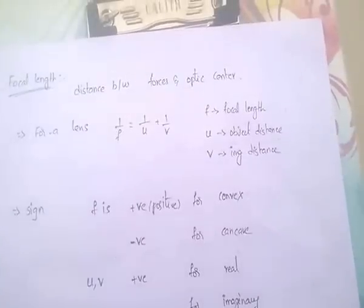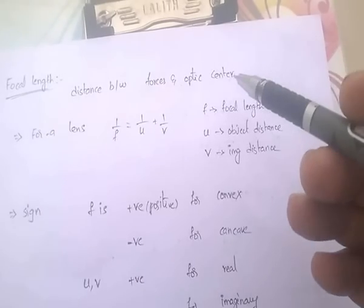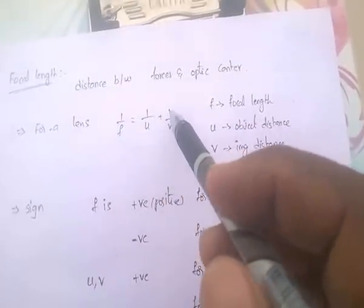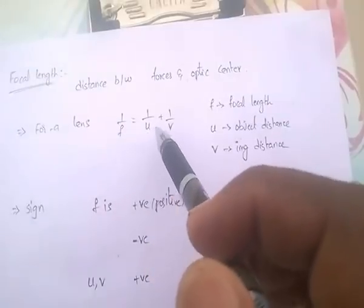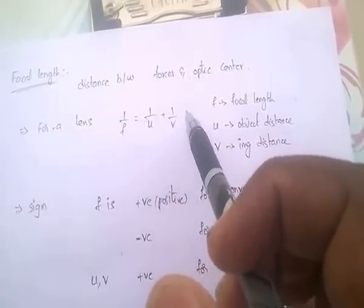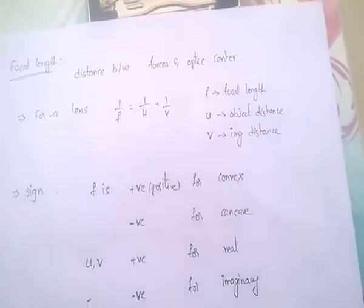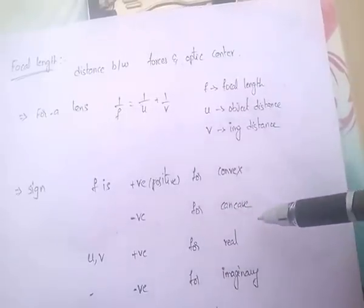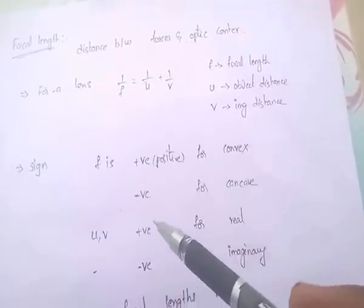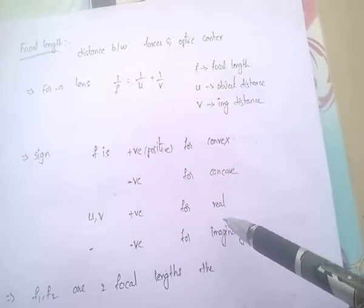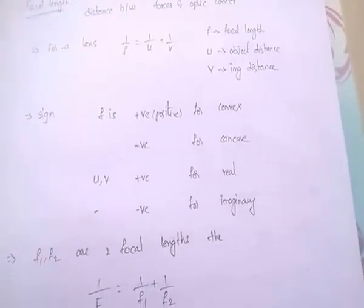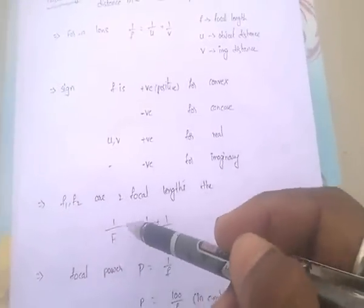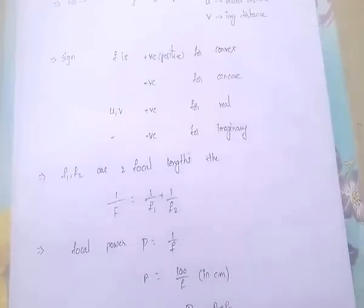Next topic is focal length. The distance between focus and optical center is called focal length. For a lens, 1 by F equal to 1 by U plus 1 by V. Here F is focal length, U is object distance, and V is image distance. F is positive for convex and negative for concave. U and V are positive for real and negative for imaginary. If F1 and F2 are two focal lengths, then 1 by total F equal to 1 by F1 plus 1 by F2.